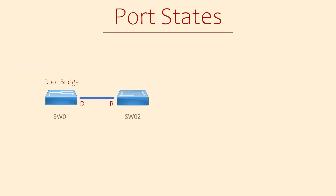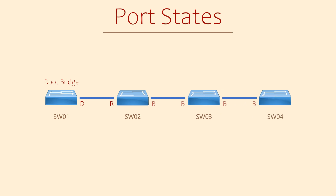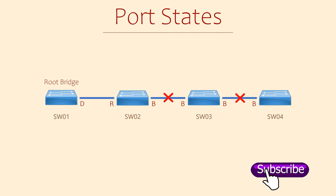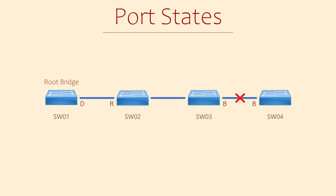As before, when an interface first comes up, it is in the blocking state so a loop can't form before it's detected. For our example, imagine that we're adding a new switch into the network. There's no loop here, but spanning tree doesn't know that yet. The switches will start sending BPDUs, which starts a negotiation process called a sync.